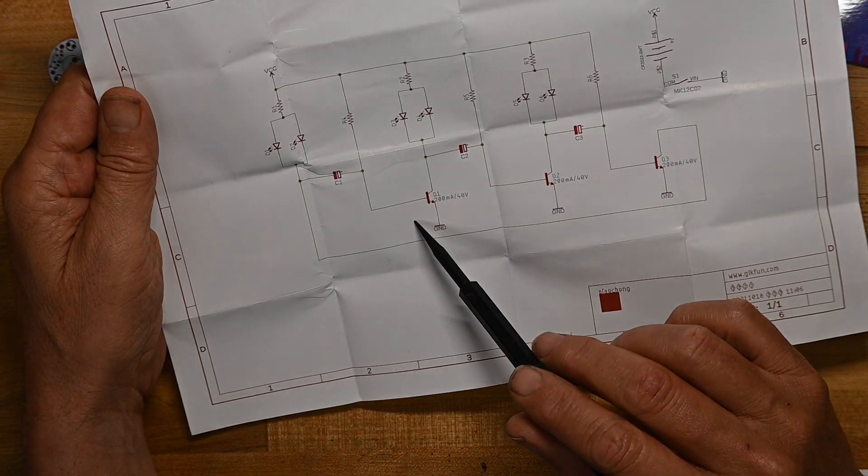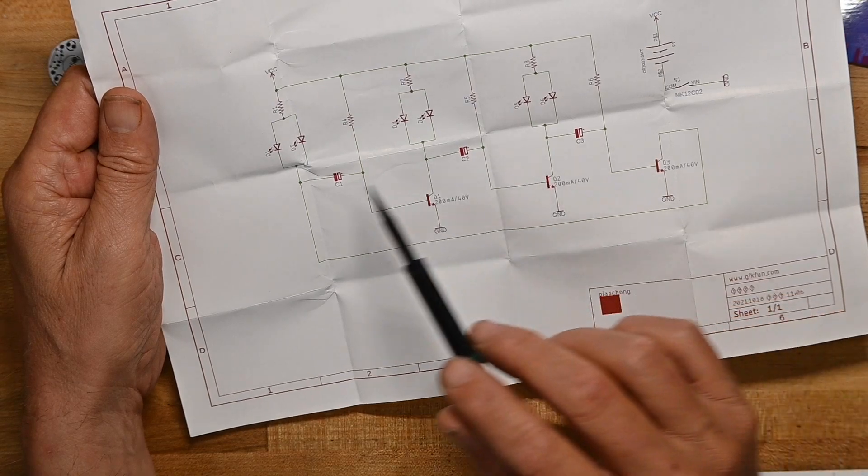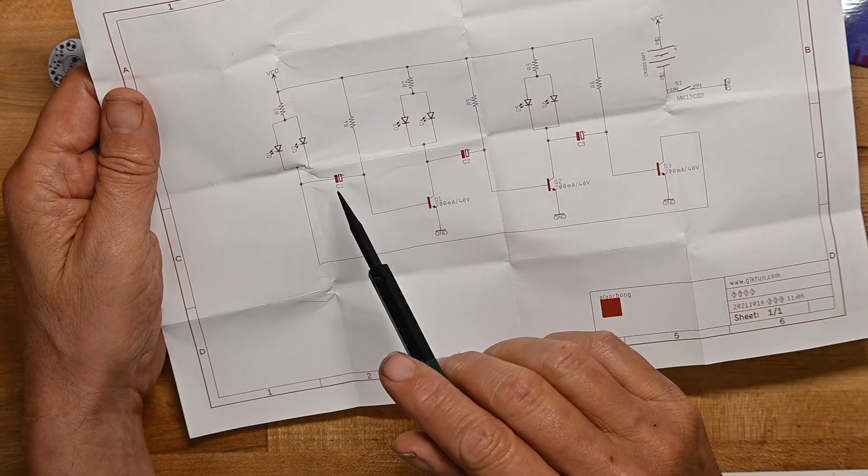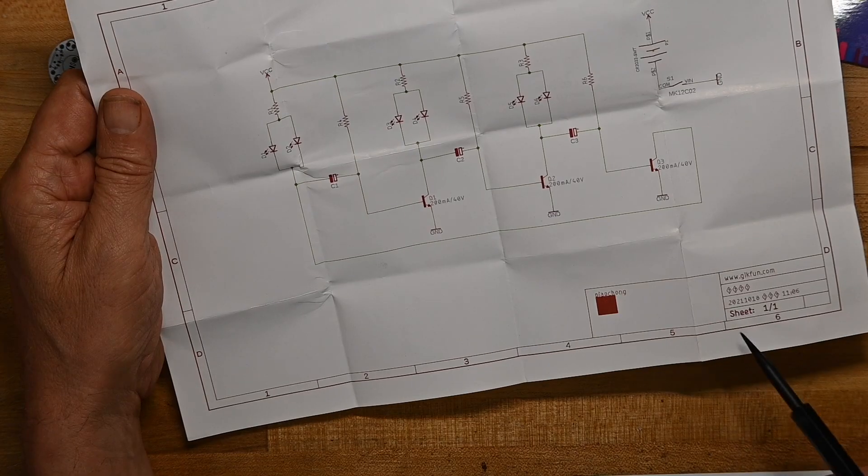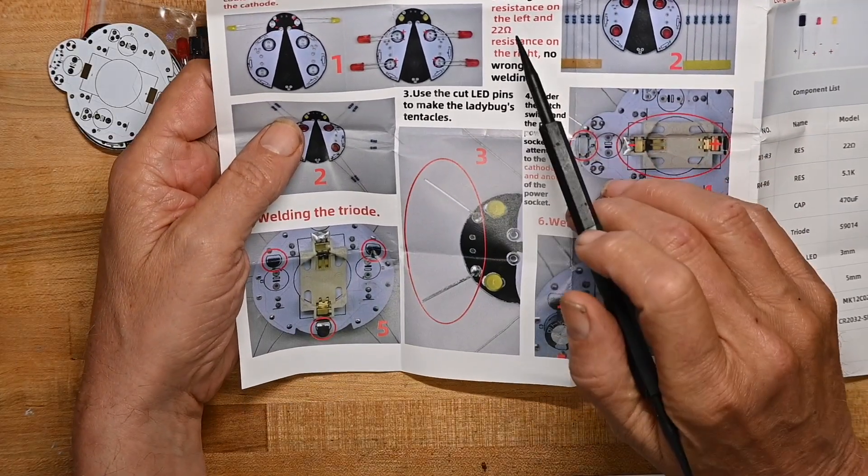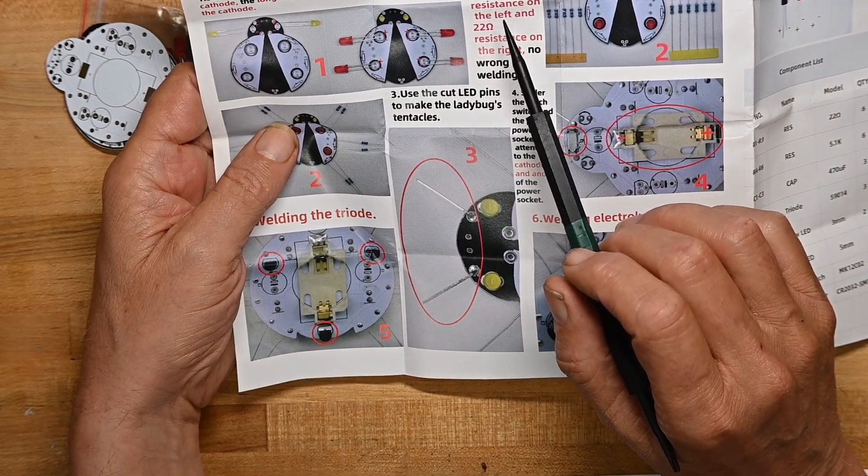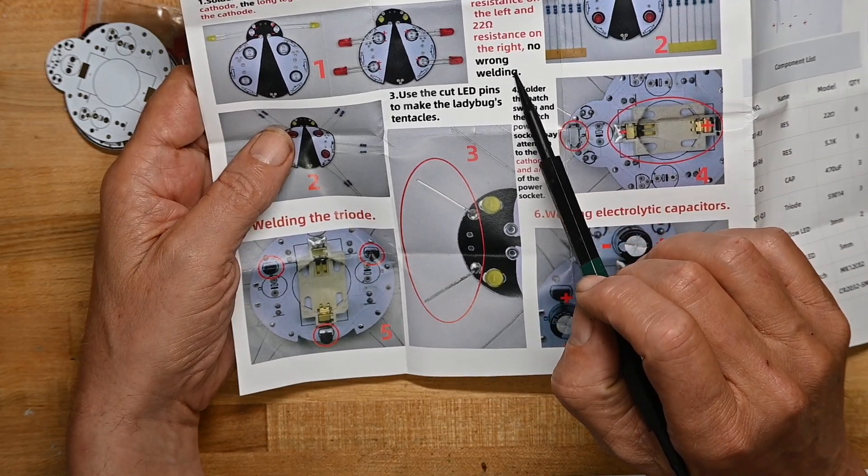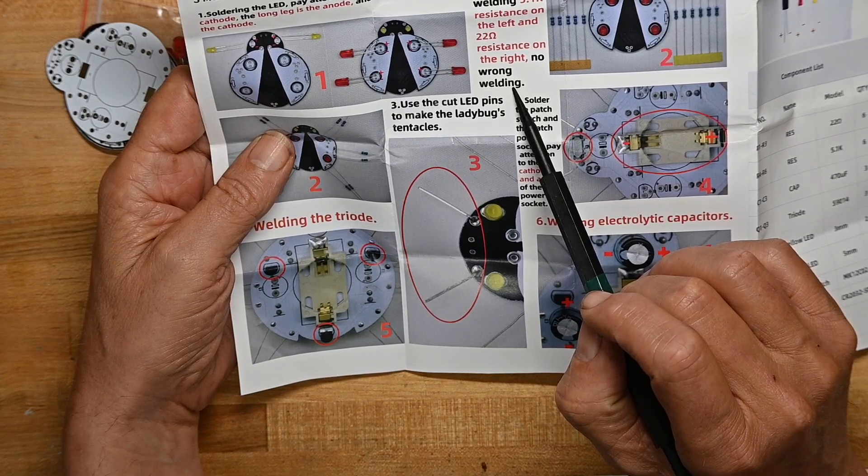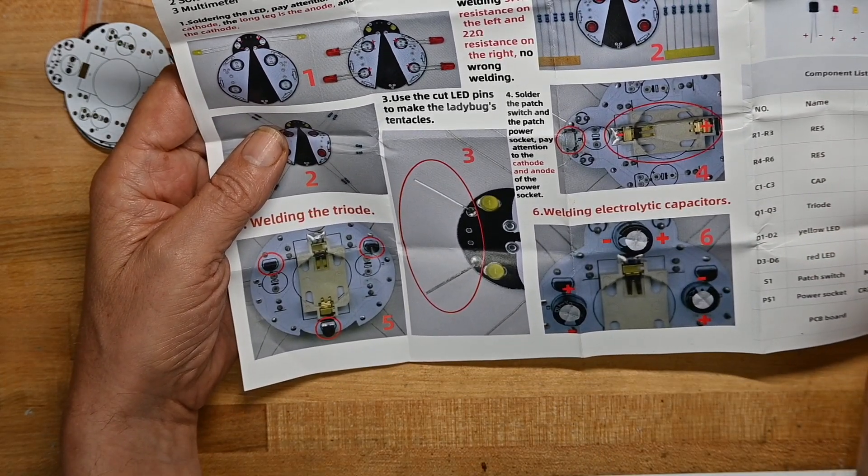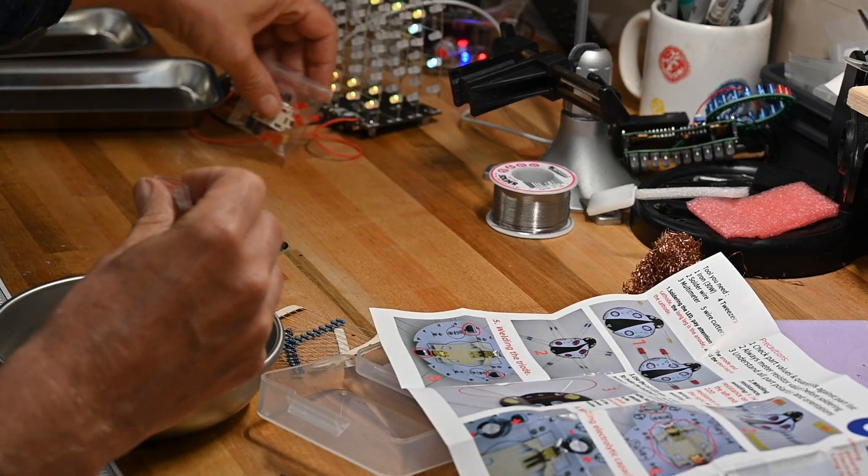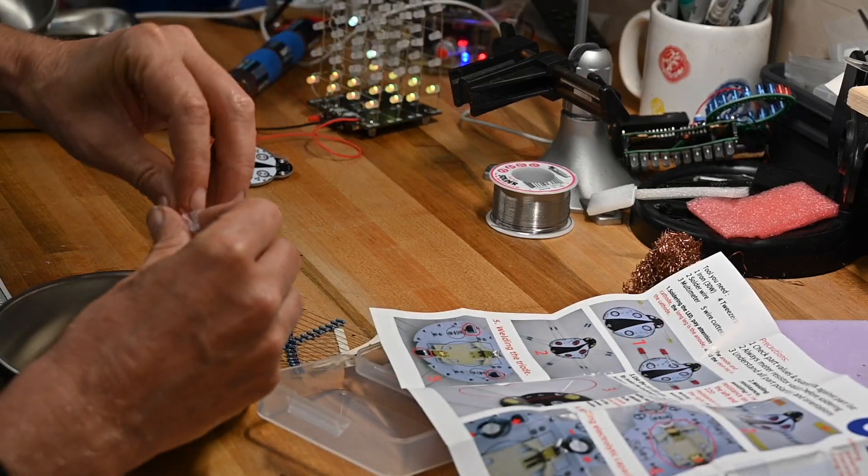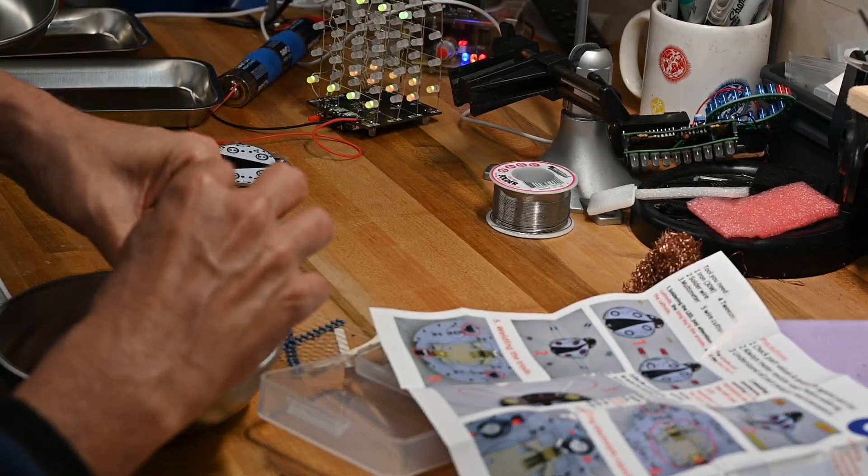A couple of three transistors. Some capacitors to blink the capacitor resistor circuits to blink the lights. So it looks like it'll be kind of fun. Welding resistance welding. 5.1k resistance on the left and 22 ohm resistance on the right. No wrong welding. Not sure what no wrong welding means, but let's look in the bag to see the specific components for each one. I'll put the other bag to the side and the other circuit board to the side so I don't confuse myself.